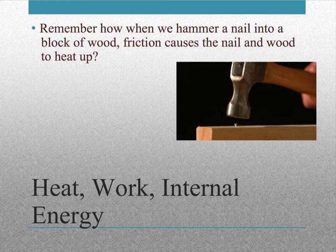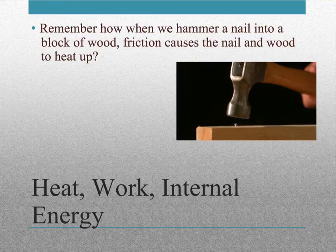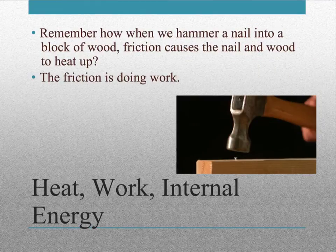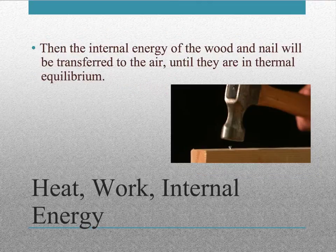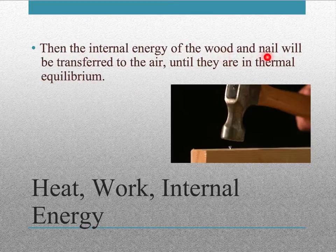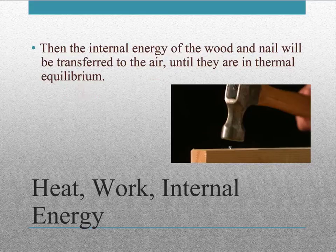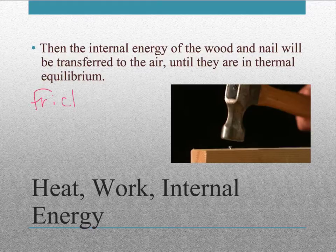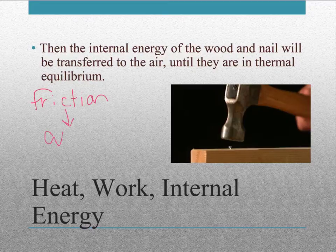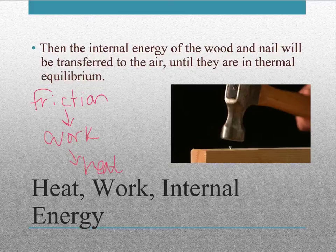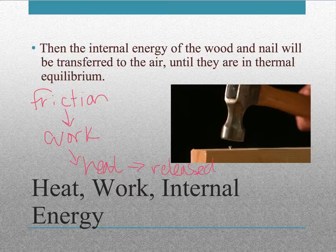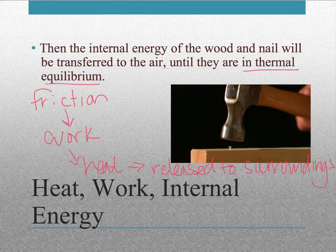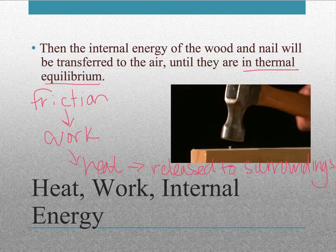I want you guys to think back and remember how we talked about if you take a hammer and you hit a nail into a block of wood, the friction between the nail and the wood causes it to heat up. So what happens is friction is doing work, and that internal energy of the wood and nail will be transferred into the air until they are in thermal equilibrium. So all that heat that's generated by the friction - we get friction here because we're hitting the hammer and nail, and that friction does work, and that work causes heat, and then that heat is released to the surroundings until it reaches thermal equilibrium. So even though heat is generated, that heat is then lost out to the surroundings again.